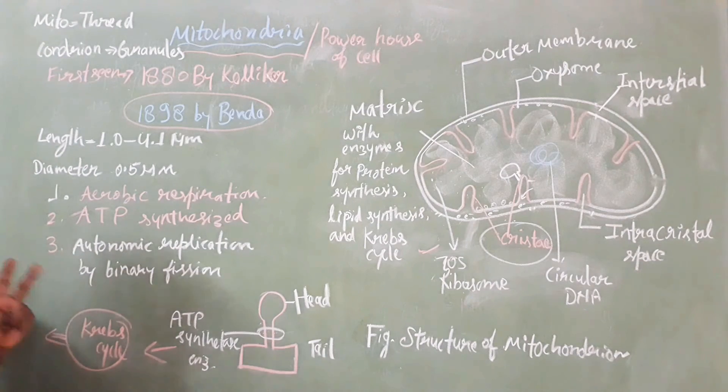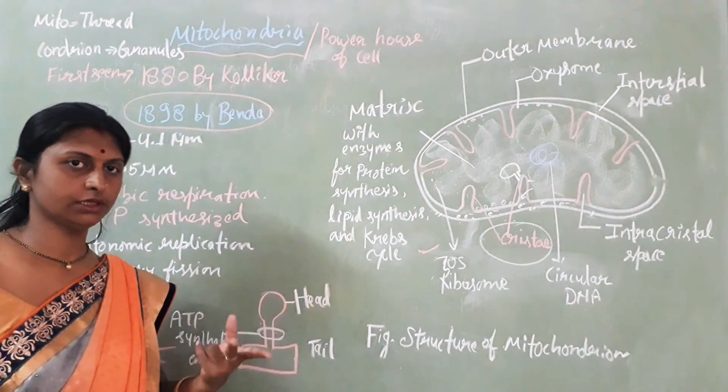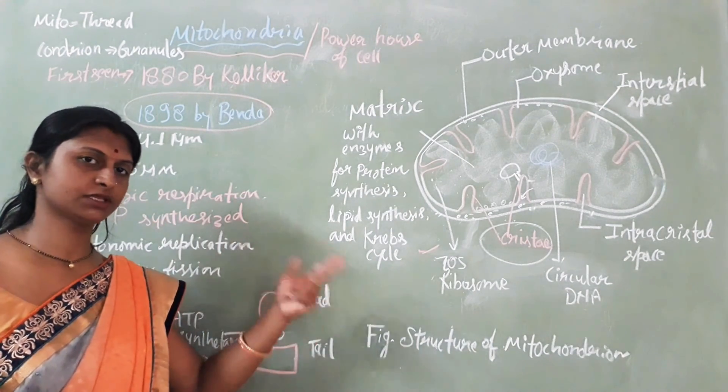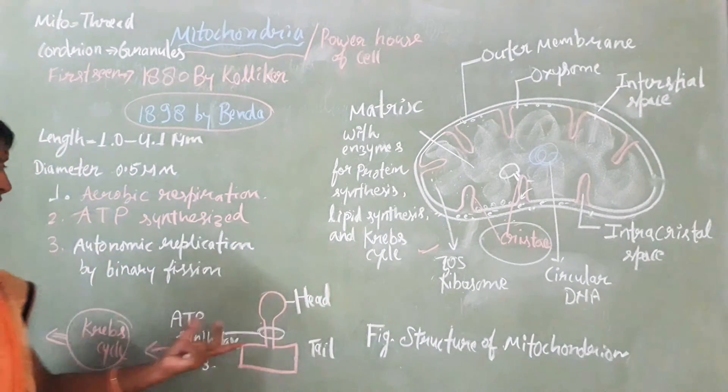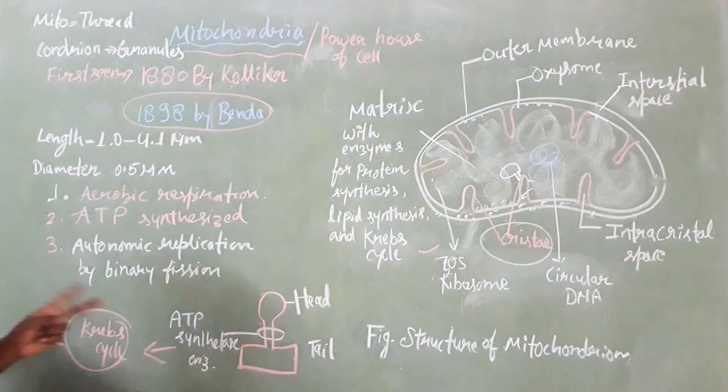In cellular respiration, two pathways are expressed. First one is glycolysis, second one is Krebs cycle. Glycolysis takes place in the cytoplasm and Krebs cycle takes place in the mitochondria. Out of these two processes, 38 ATP are synthesized.